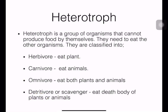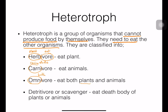Heterotrophs are a group of organisms that cannot produce food by themselves, so they need to eat other organisms. We classify them by the food they eat: herbivores eat plants ('herb' means plant, 'vore' means to eat), carnivores eat animals, and omnivores — 'omni' means both — eat both plants and animals. Detritivores eat dead bodies or the soils of plants and organisms.